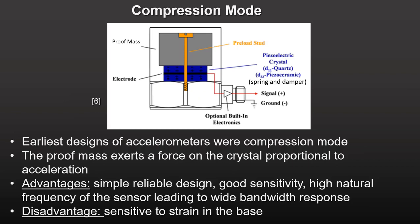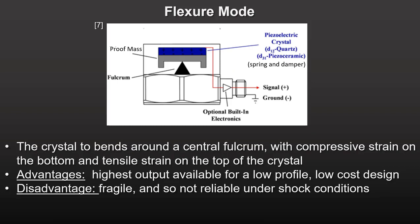The original designs for accelerometers were of the compression mode type. In this simple design, a quartz crystal or ceramic element was preloaded with a seismic mass. The sensors had high sensitivity and high natural frequency, providing a broad usable frequency range. However, the design was sensitive to strain in the base, and various tweaks over the years could not eliminate this problem. Hence, this type of design was replaced by other geometries.